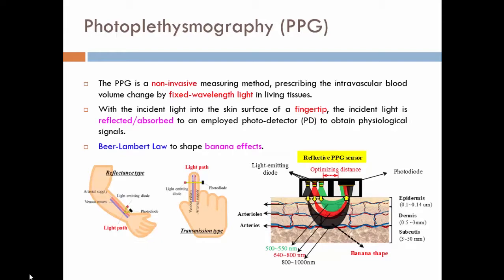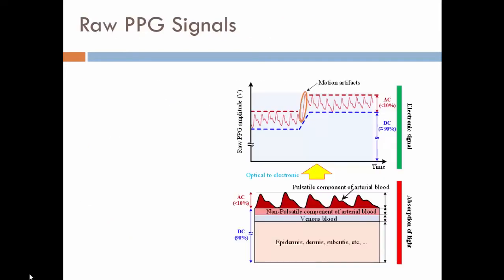Then the PD will be converting whatever optical power received to the electronic signal. If you're looking at the electronic signal, essentially there are two different components: the pulsating component, we call it AC over here, and the other one is DC components.